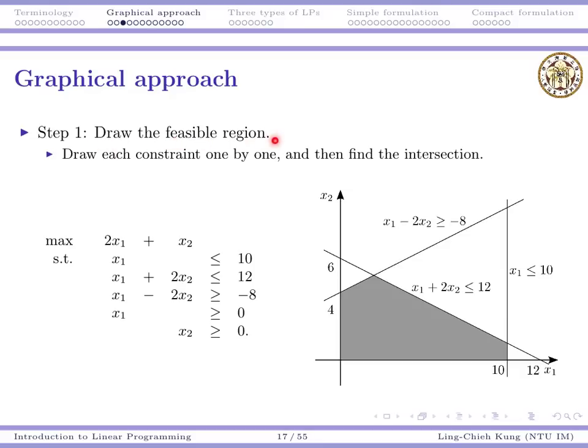The first step is always to draw the feasible region. All we need to do is take each constraint one by one, and for each of them, draw the line and then determine which side is feasible. For example, x1 ≤ 10, you first draw this vertical line and then you see the left-hand side is feasible. For the second constraint, x1 + 2x2 ≤ 12, you draw this line. The left-hand side is feasible. For the third one, the right-hand side is feasible and so on.